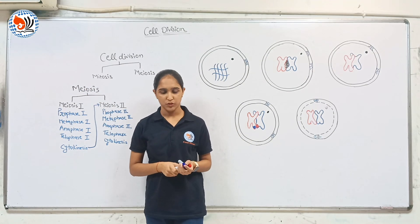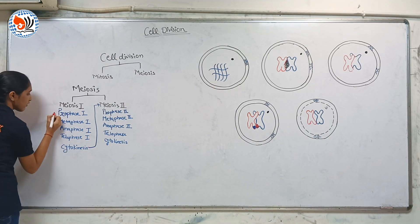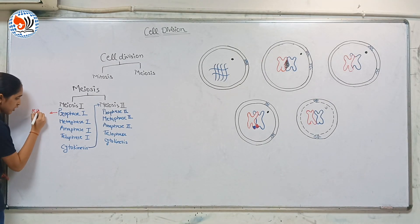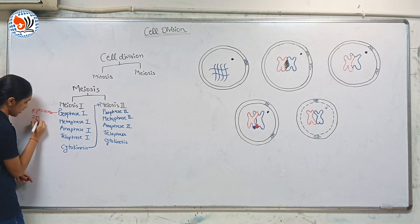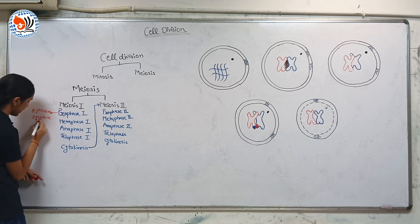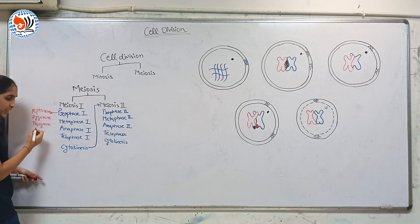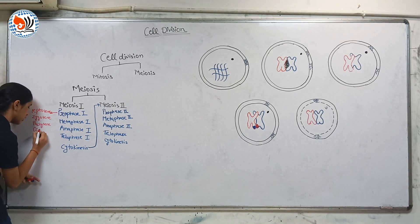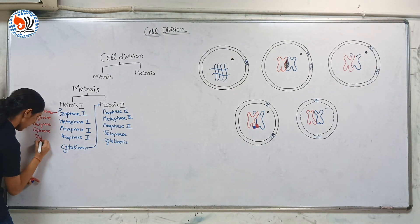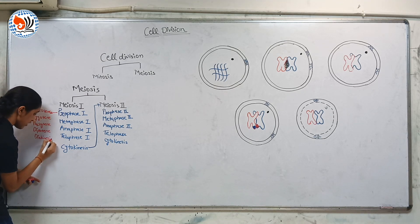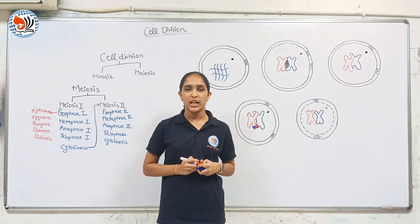Prophase 1 of meiosis 1 is the longest stage and it is subdivided into five steps: leptotene, zygotene, pachytene, diplotene, and diakinesis. To learn these five stages, there is a mnemonic. Let us see what the mnemonic is.